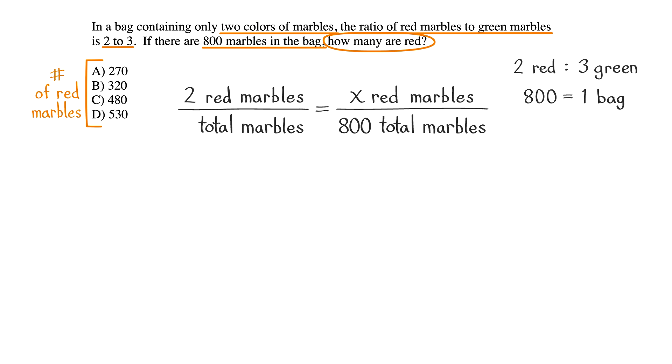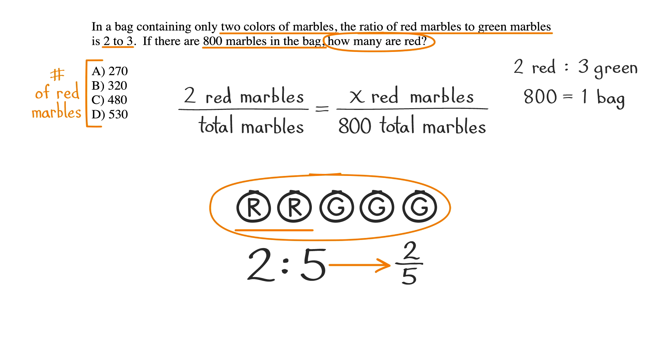We have the ratio of 2 to 3, so we want to draw two circles and label them r, for red. Then draw three more circles and label them g, for green. This shows us that the ratio of red marbles, 2, to total marbles, 5, is 2 to 5, or two-fifths.